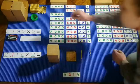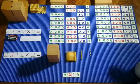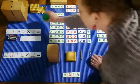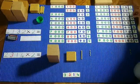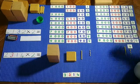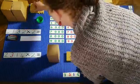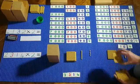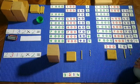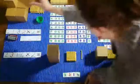I need four units. One, two, three, four. I need one ten. I need three hundreds. One hundred, two hundred, three hundreds. Then I need two thousands. One thousand, two thousand.